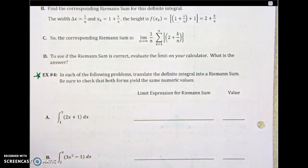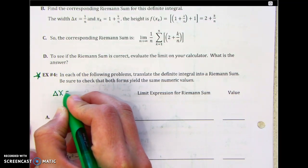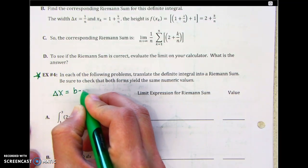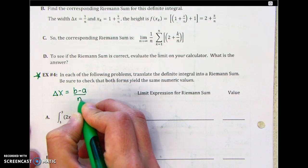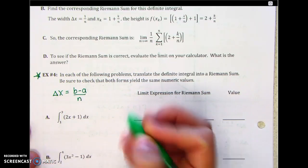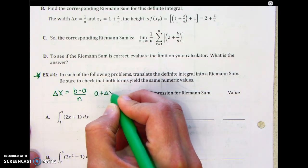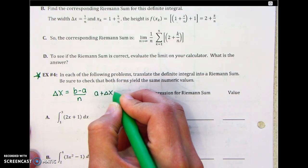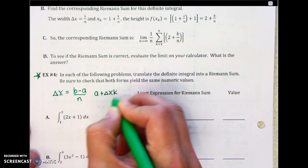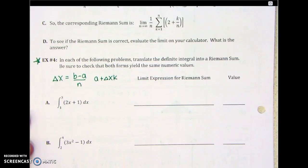We have some formulas from the other pages that we need to recall. One of them is delta x — it's always going to be b minus a divided by n. That's our width of the base of the rectangle. And then we also have a plus delta x times k, and this is going to go inside of our function.